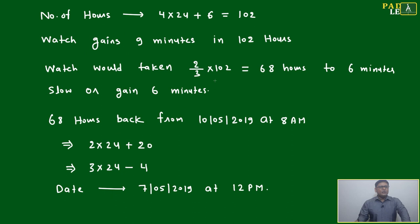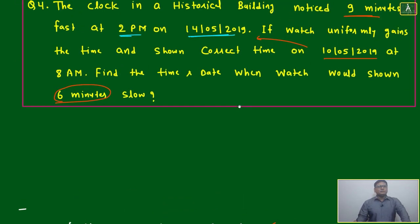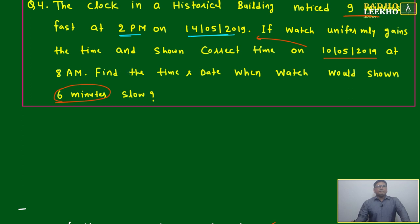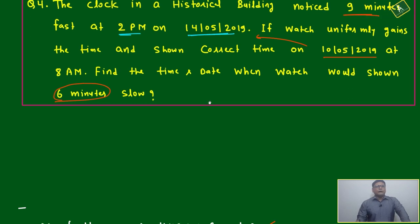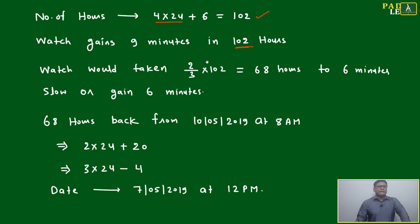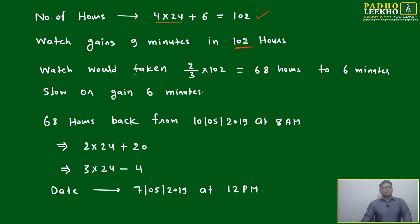One thing is sure calculation will be similar but little careful. Number of hours - between these two dates it will be 24 into 6, it will be 102 hours. Watch gains 9 minutes in 102 hours. This is 10 to 14 - from 10/5 at 8 AM to 14/5 at 2 PM, 4 complete dates plus 6 hours, 102 hours.